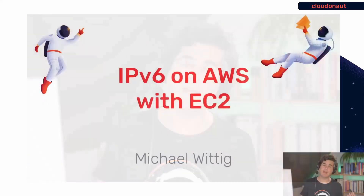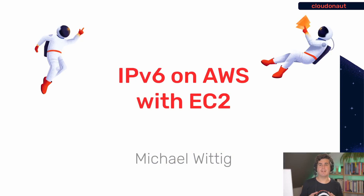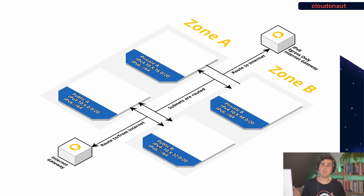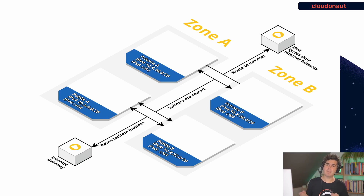Welcome to another cloudonaut plus video. My name is Michael and today I will talk to you about IP version 6 on AWS using EC2 instances. The network topology I'm going to use here is a two-zone topology with public and private subnets — concepts you already know from the IP version 4 world — but a couple of things change if we switch to IP version 6.